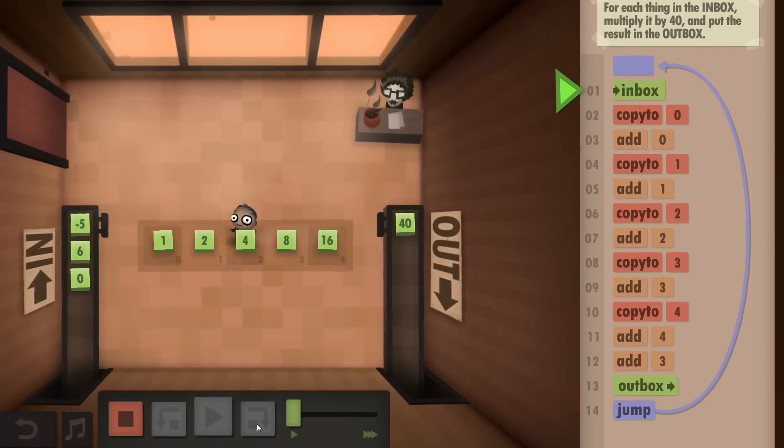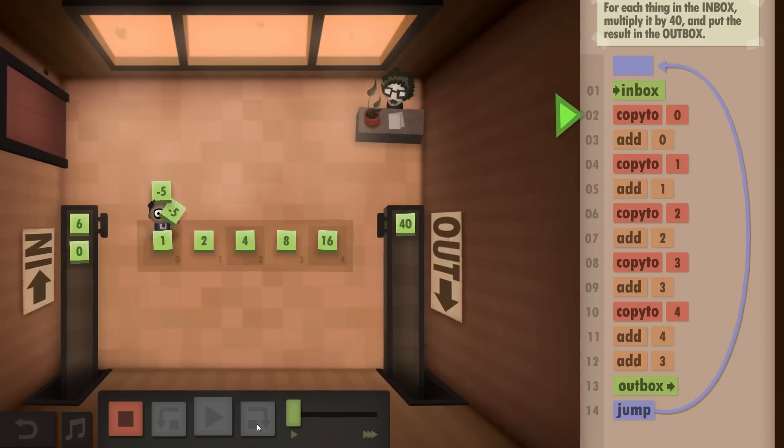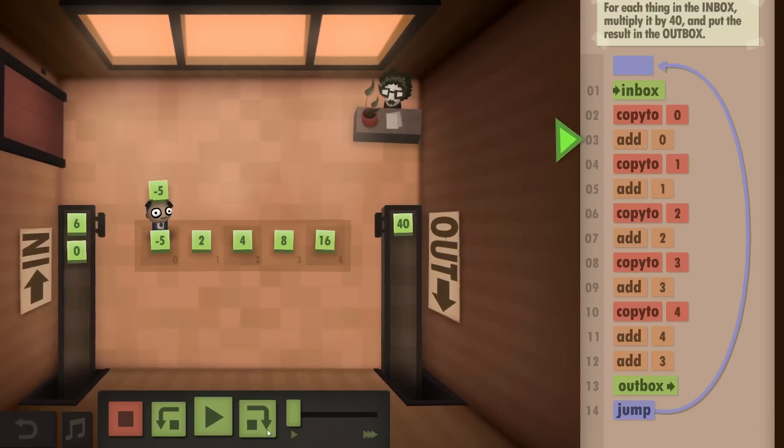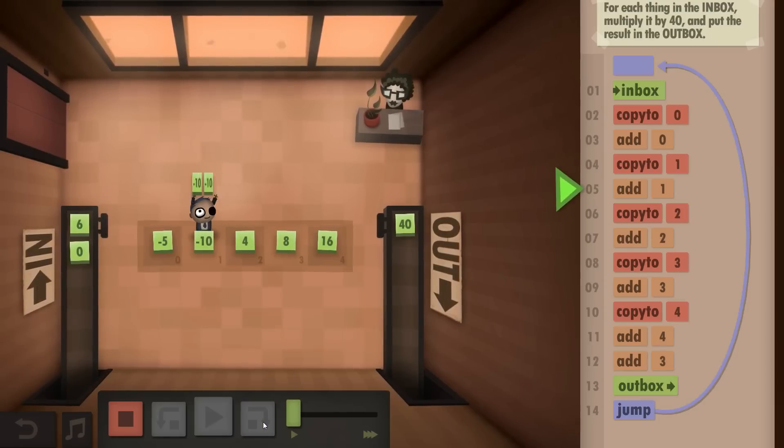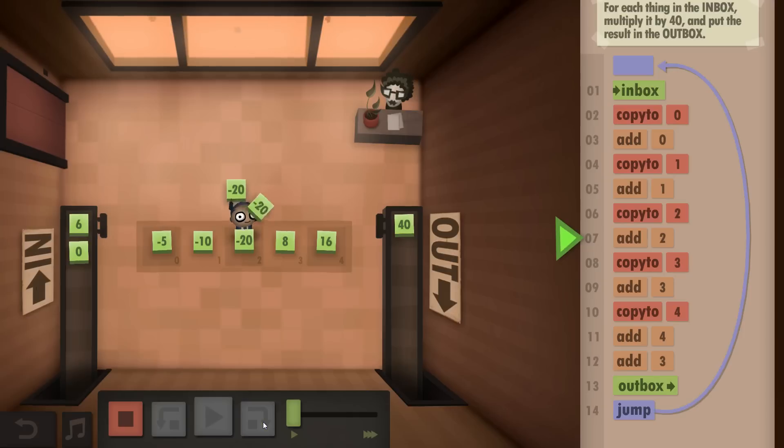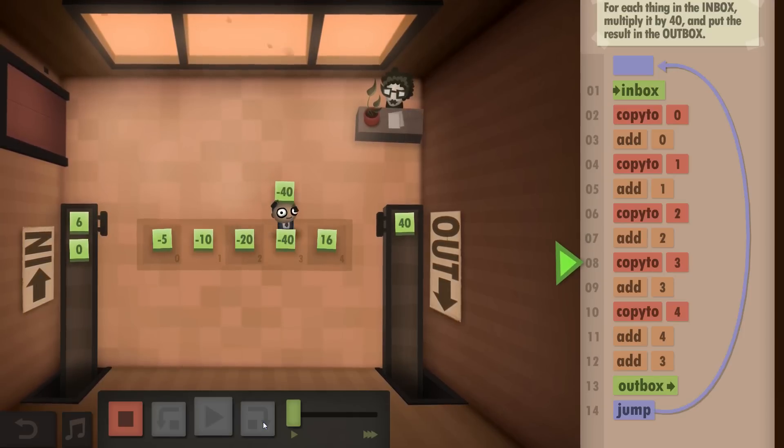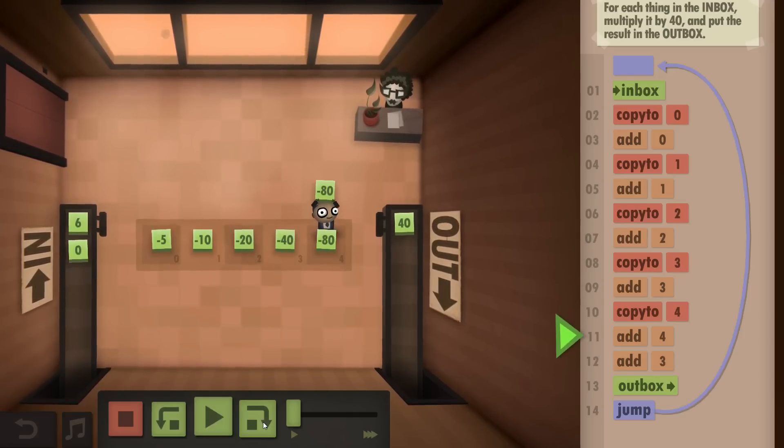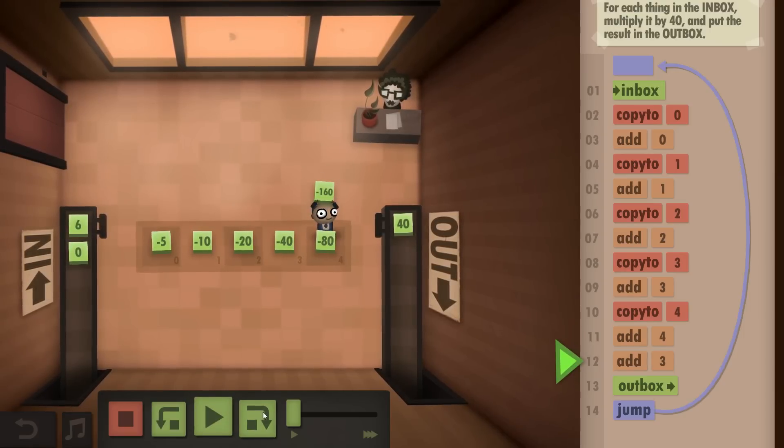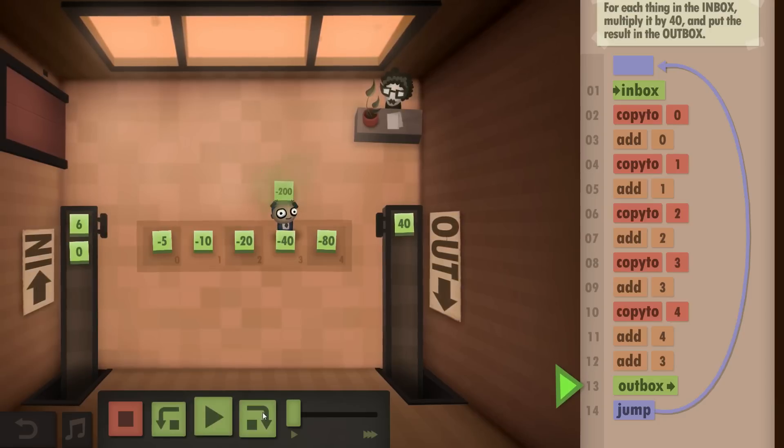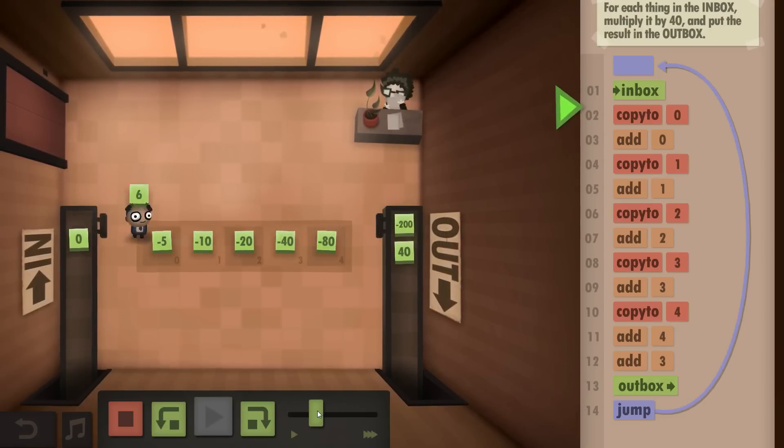So again, we take from the inbox and go through the same doubling process. We get the times 32 in hand, and then we just add the times 8 to that again to get the times 40, put that in the outbox, and repeat.